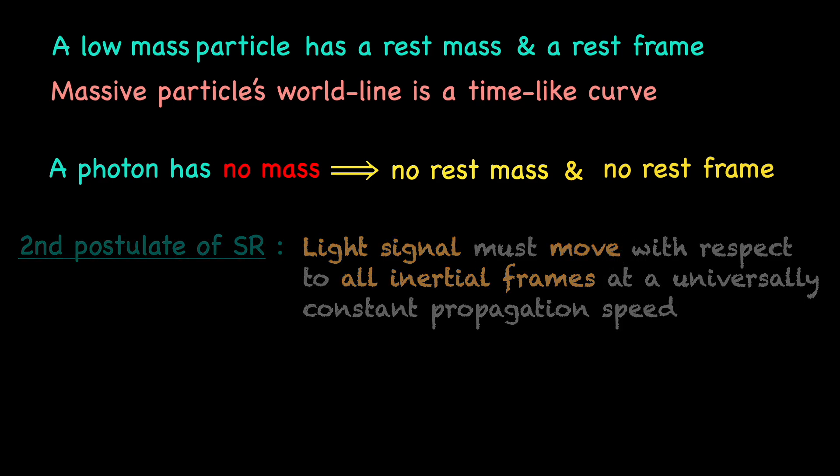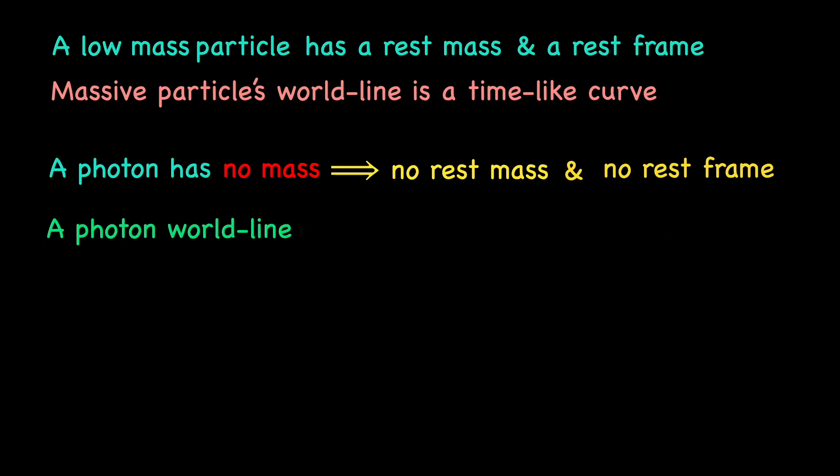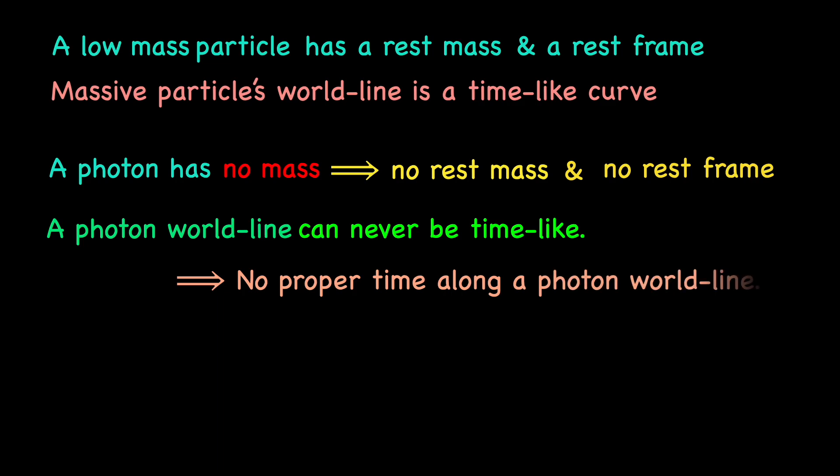So, there are no inertial frames where the spacetime trajectory or world line of a photon is purely in the time direction. Its world line can never be timelike. Consequently, we cannot define a proper time along a photon world line.